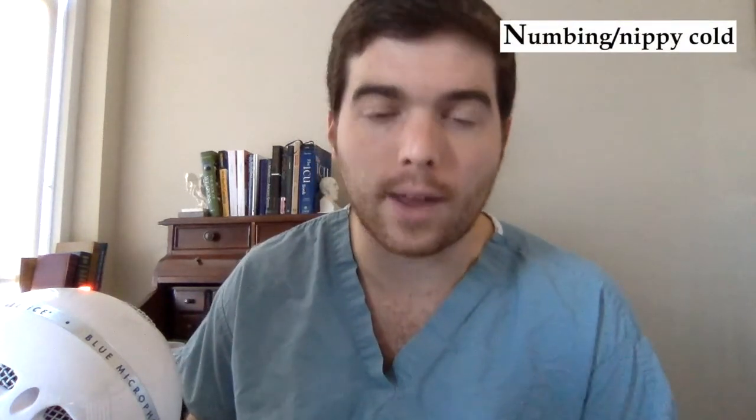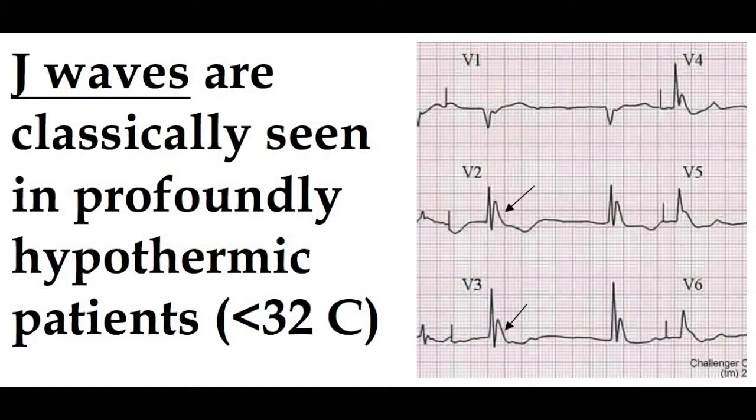N is numbing or nippy — implying cold temperature. Hypothermia is classic for bradycardia, especially in the elderly. On board questions, the elderly are more prone to hypothermia because of decreased muscle mass and decreased ability to maintain body warmth — classically an elderly person who lives alone, or a homeless person found outside in winter. These people need to be actively rewarmed, and they're prone to asystole as well as atrial fibrillation.